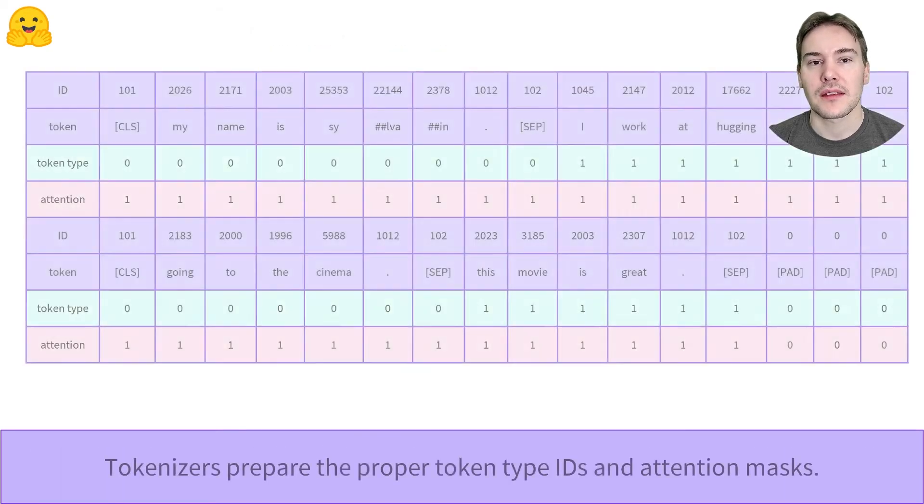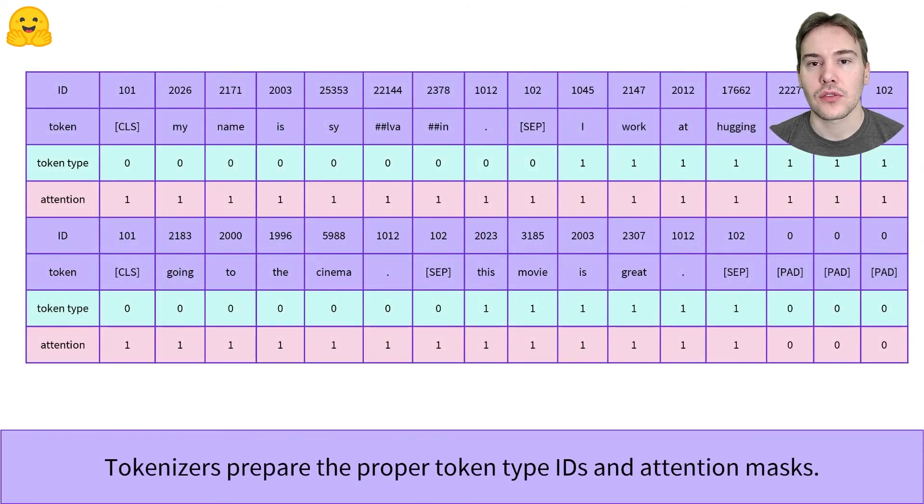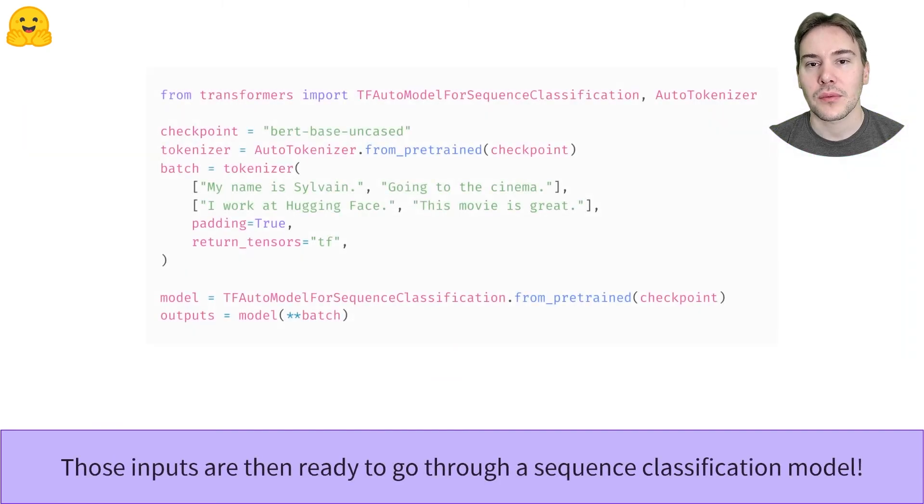Zooming in at the result, we can see how the tokenizer added padding to the second pair of sentences to make the two outputs the same length. It also properly dealt with token type IDs and attention masks for the two sentences. This is then all ready to pass through our model.